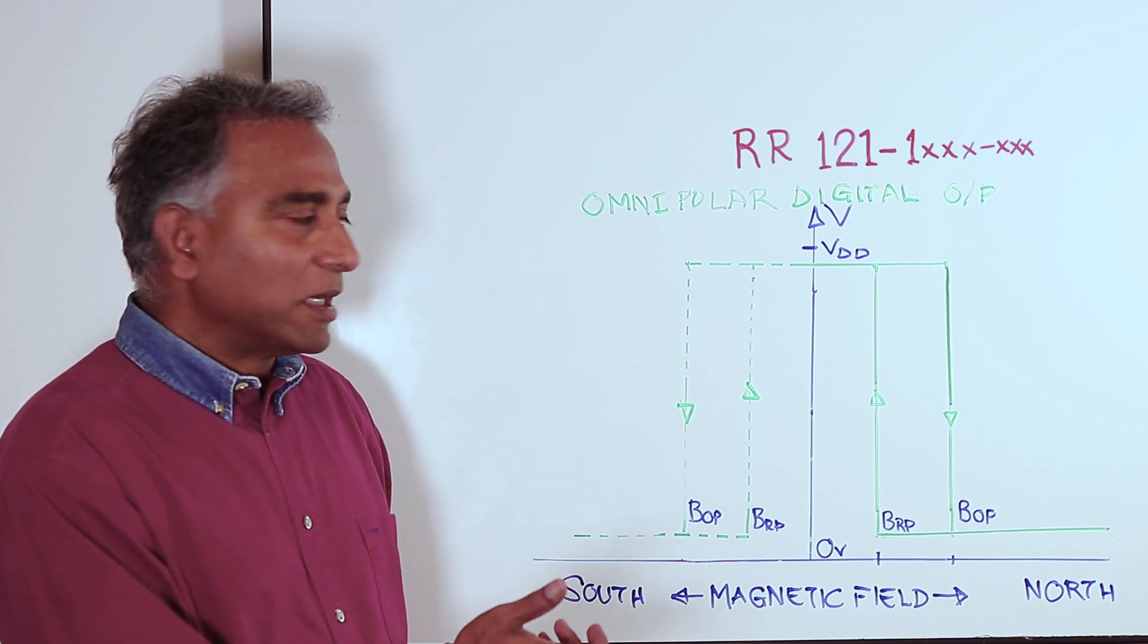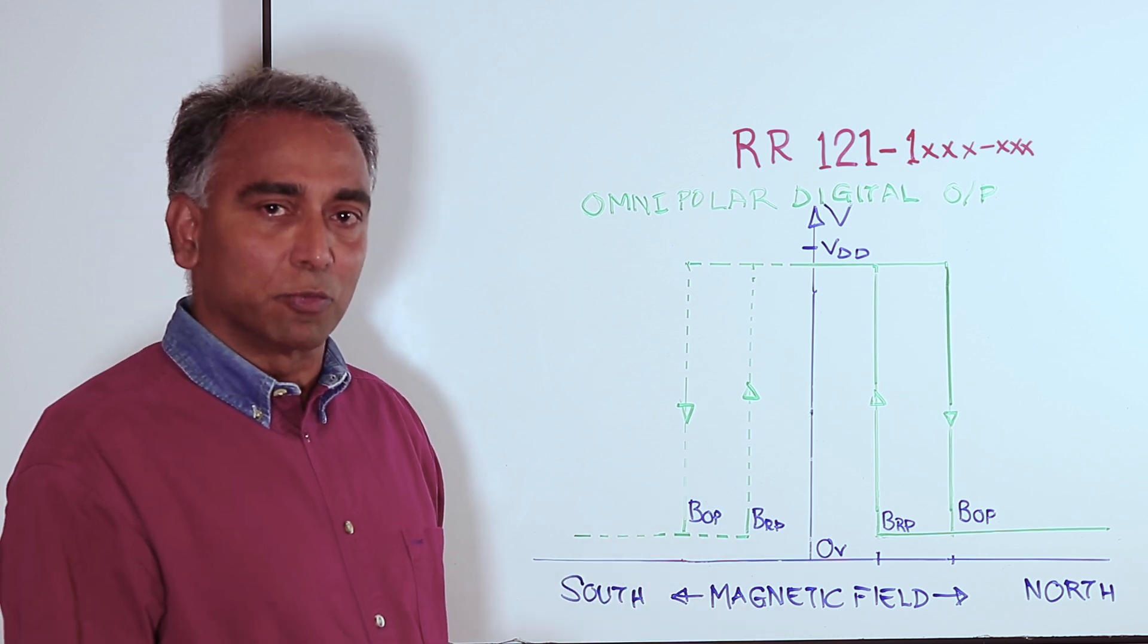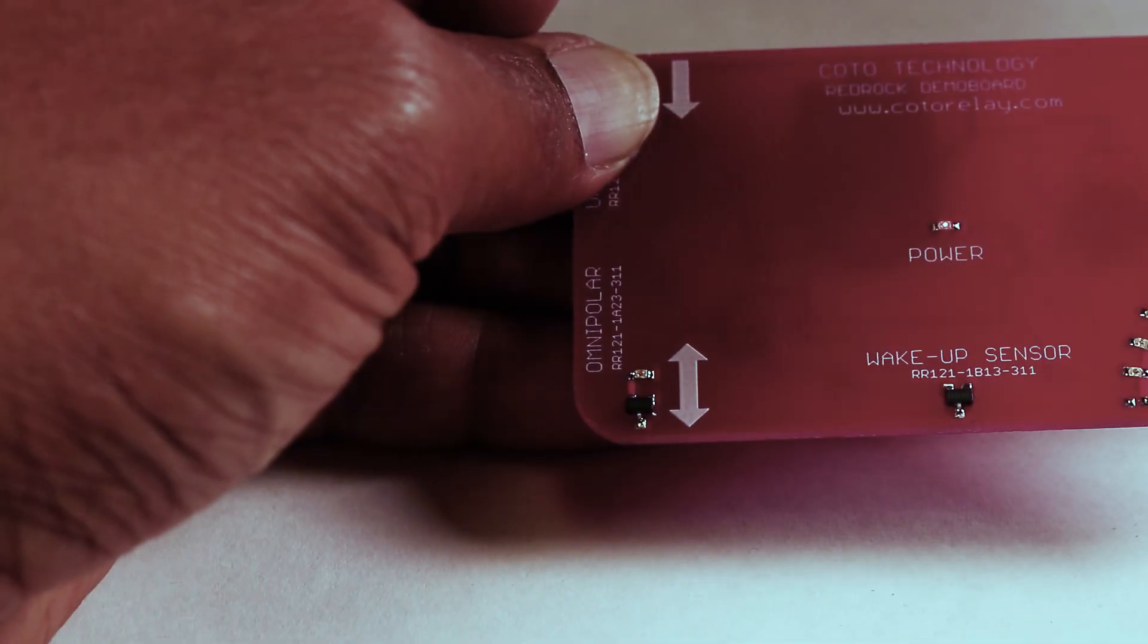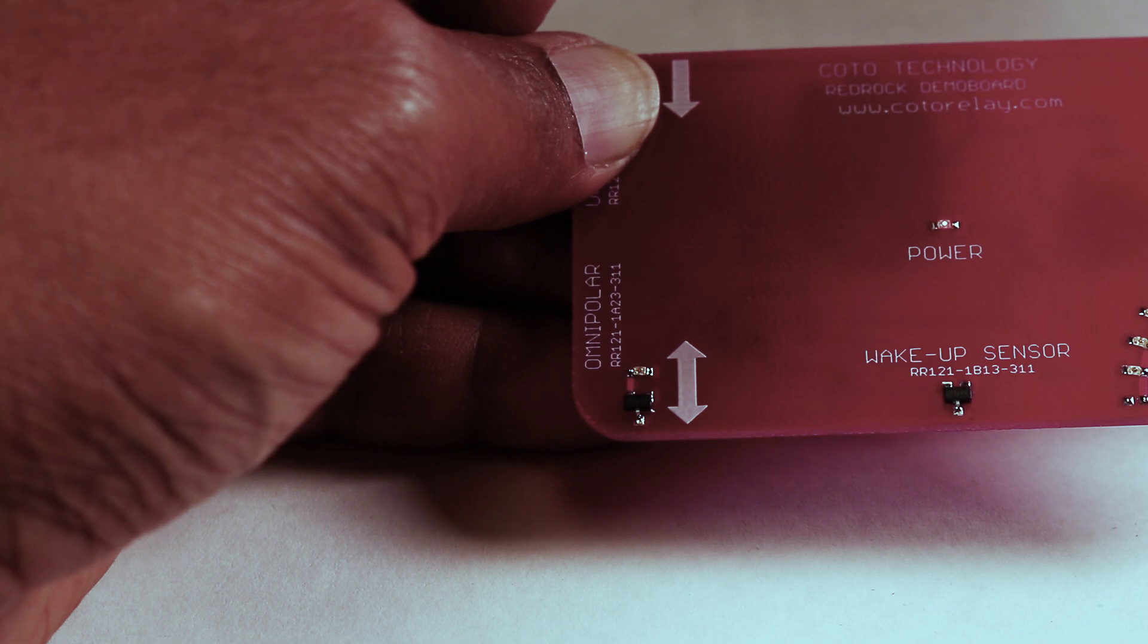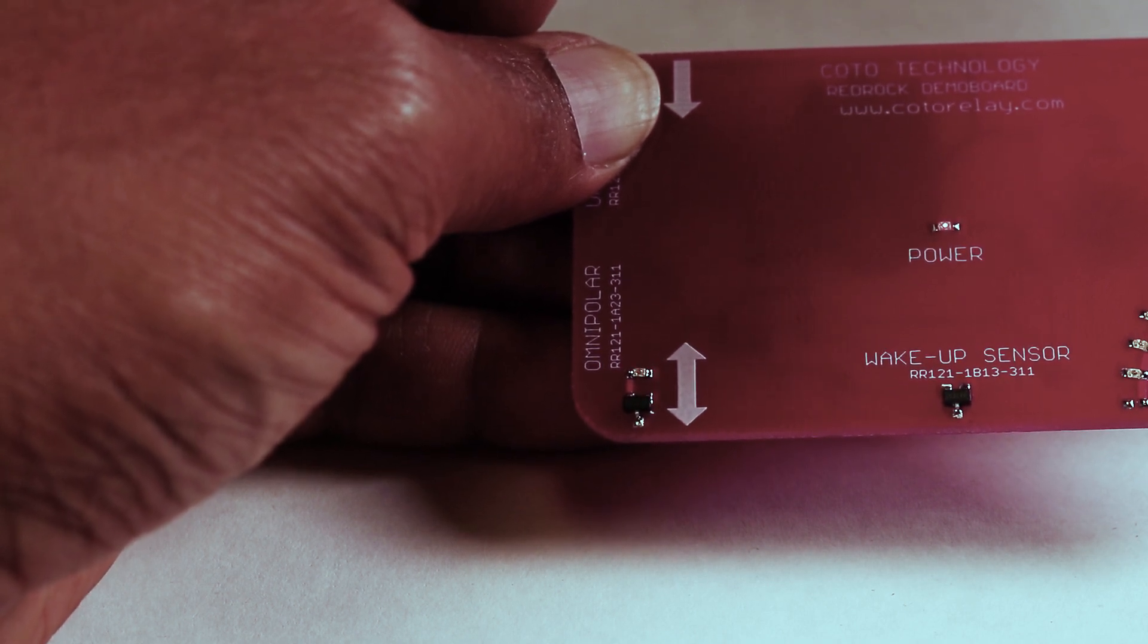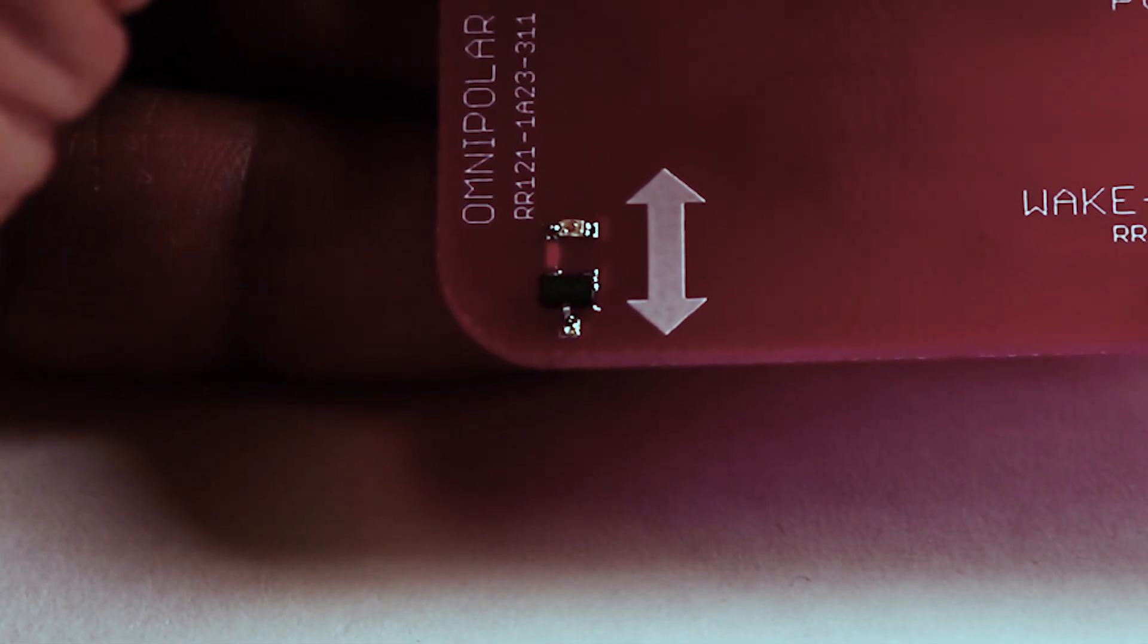Let's now go to the demo board and look at how the sensor operates as we move a magnet closer or farther away from the sensor. Here we have the omnipolar output digital sensor from Kota Technology, the RR 121-1823-311. This is a high sensitivity omnipolar sensor from Kota Technology.